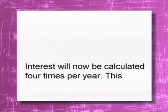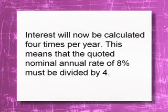The interest rate is quarterly. What do we do with the quarterly interest rate? We've got to divide the interest by four. But now what happens to the time period? Clearly the interest is calculated four times per year. This means that the quoted nominal annual rate of eight percent must be divided by four.